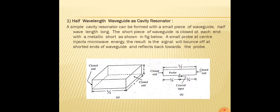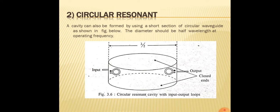Simple cavity resonators can be formed with a small piece of waveguide half a wavelength long. Through a probe, microwave energy is injected. The result is that the signal bounces off at the short ends of the waveguide and reflects back towards the probe. This is how the half wavelength waveguide cavity resonator works.